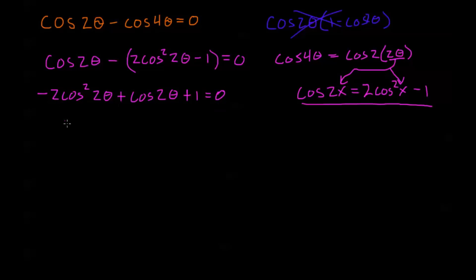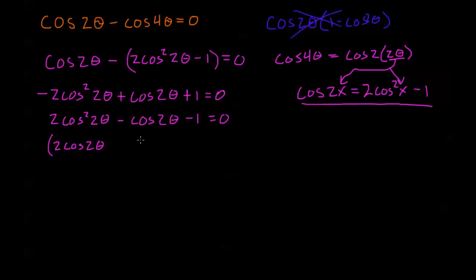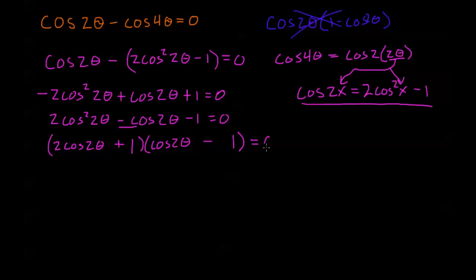Multiplying both sides by negative 1 to remove the leading negative: 2 cosine squared of 2 theta minus cosine of 2 theta minus 1 equals 0. Now I can factor this quadratic. One factor has 2 cosine 2 theta, the other has cosine of 2 theta. The constant term is negative 1, so I have a positive 1 and a negative 1 at the ends. Because the middle term is negative, the negative goes with the 2 cosine 2 theta factor. So I get (2 cosine 2 theta plus 1)(cosine 2 theta minus 1) equals 0.